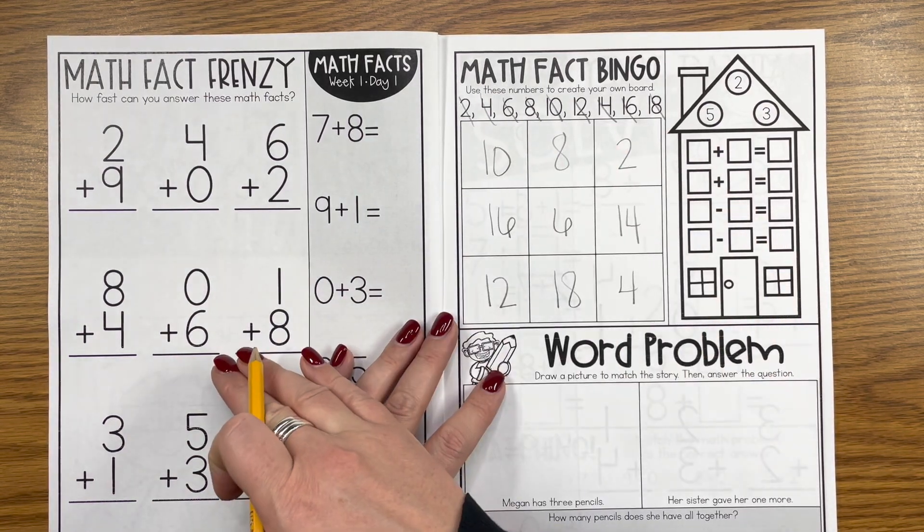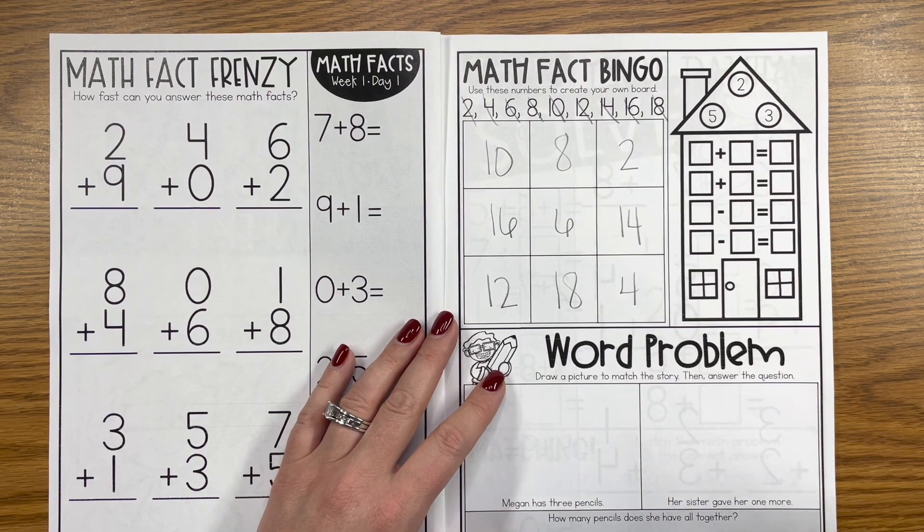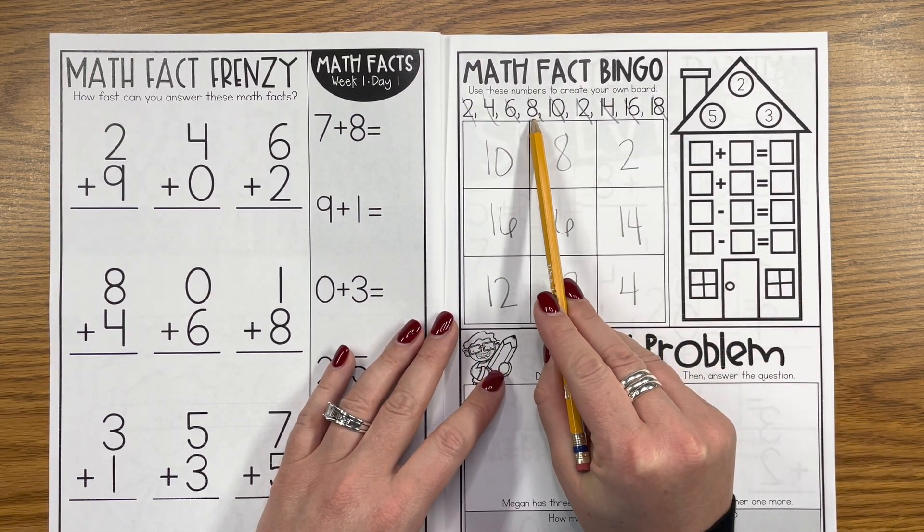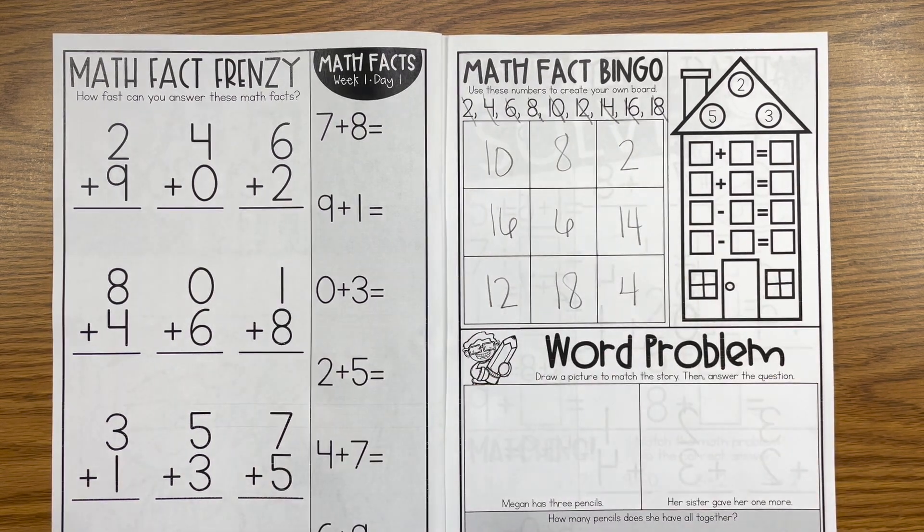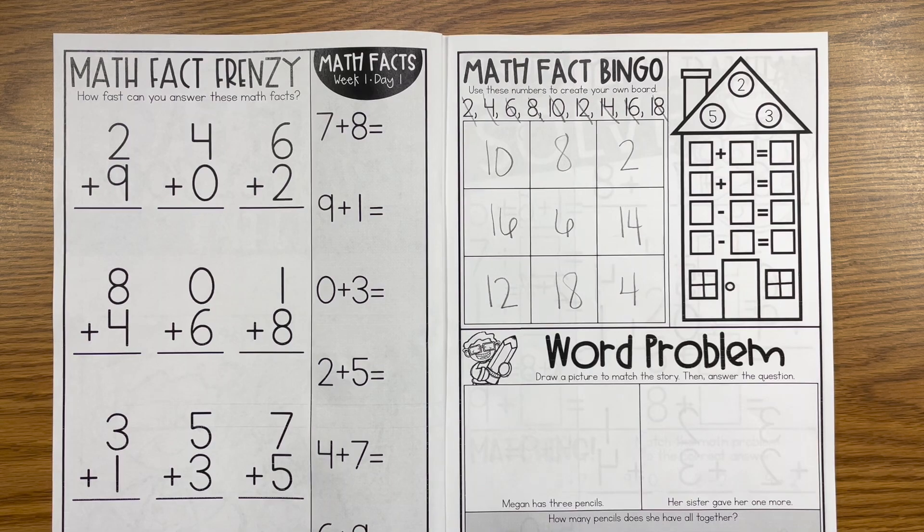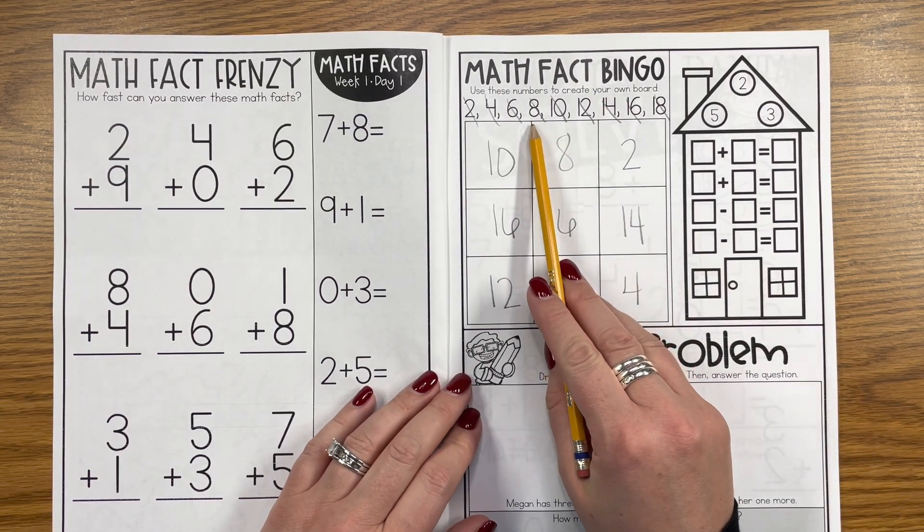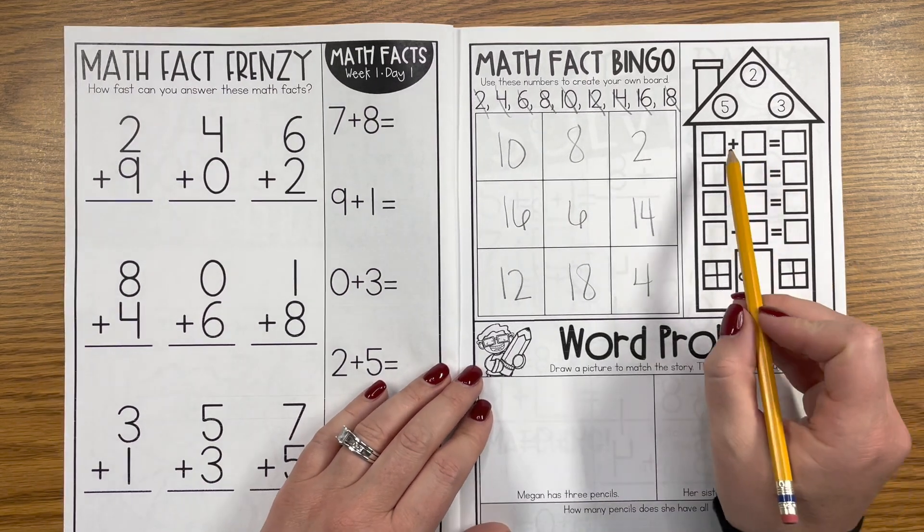I choose the flashcards that are included with this bundle. I just choose ones that would have these sums, maybe things that were over here, maybe ones that I know those students are working on. I kind of pull those. There could be multiple facts that equal 8 or multiple facts that equal 14, or really any of these. You can pull the fact or facts that you want.